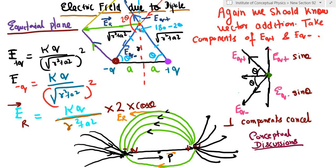All right, so this is again a conceptual discussion on electric field due to a dipole. But this time we are calculating the electric field at the equatorial plane, which is the perpendicular axis to the line joining the two charges. So you can see the red dot is the equatorial plane and I have selected a point.